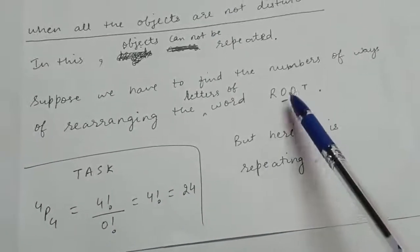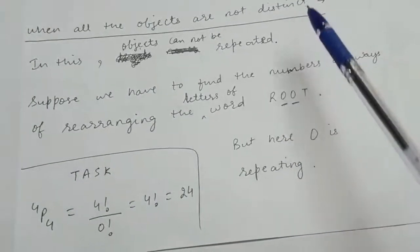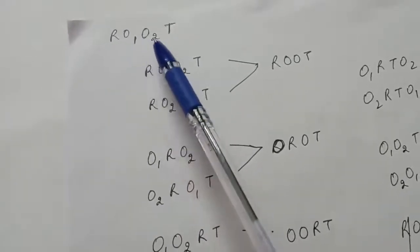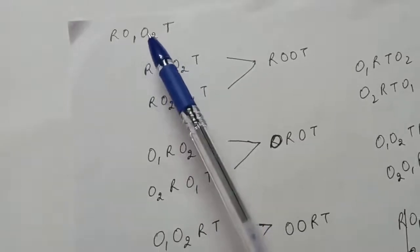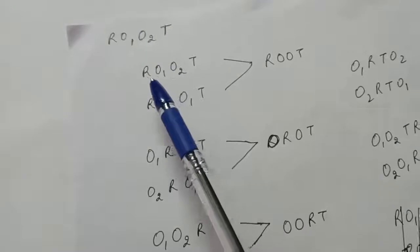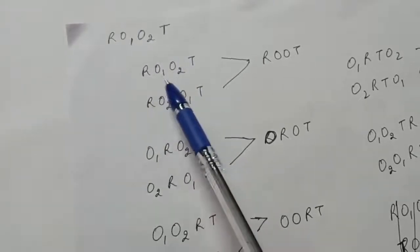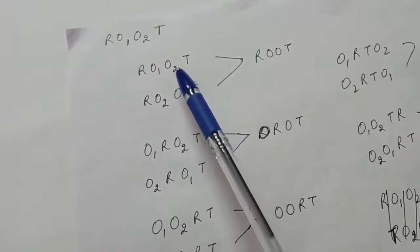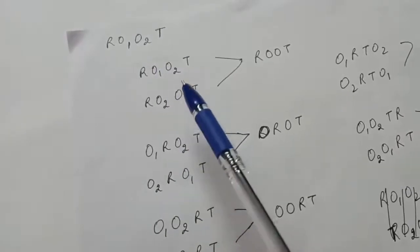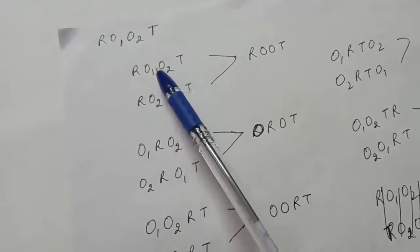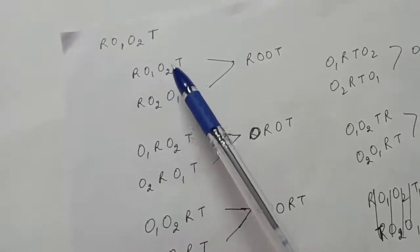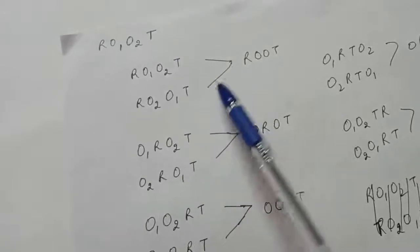For ROOT, let us assume the two O's are different and call them O1 and O2. Then one arrangement can be R,O1,O2,T and another is R,O2,O1,T. But because both O's are the same in the actual word ROOT, these two different arrangements give only one result: R,O,O,T.